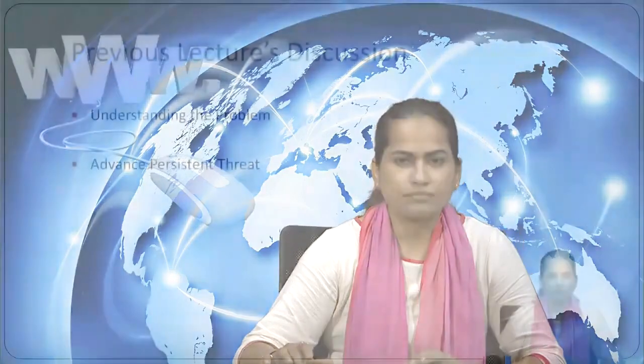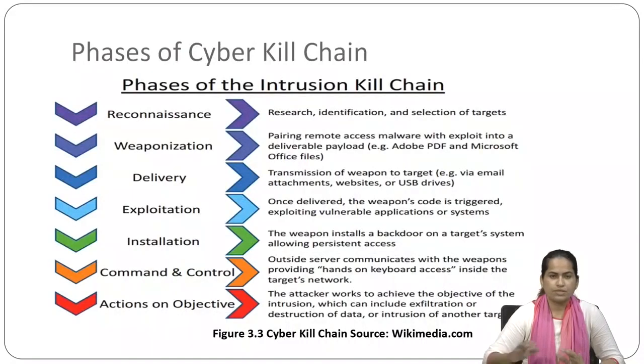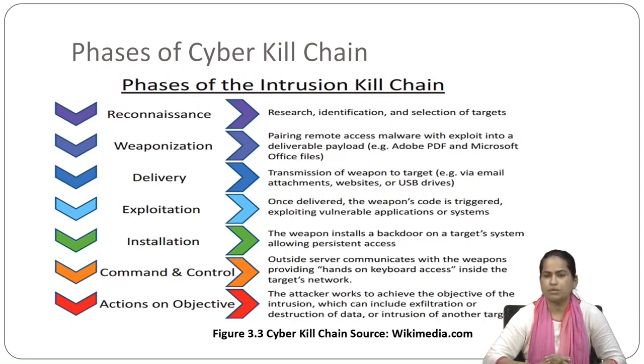Suppose we start the first phase; it will give some output. Whatever output we have in the first step will be the input of the second step. We are having seven steps: reconnaissance, weaponization, delivery, exploitation, installation, command and control, and actions on objective. In reconnaissance, we are gathering information — two types: active and passive. Then weaponization follows, where the output of reconnaissance becomes its input.